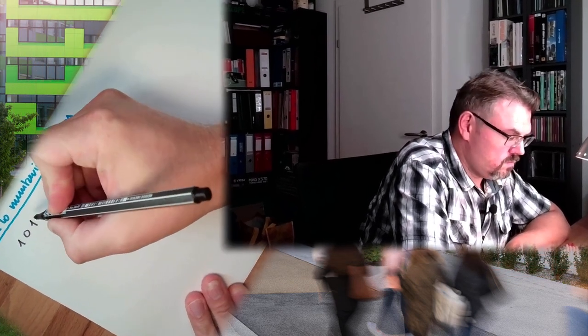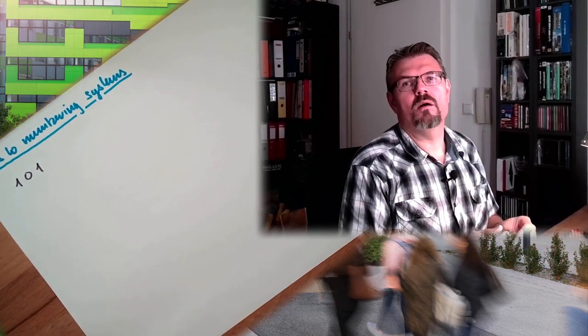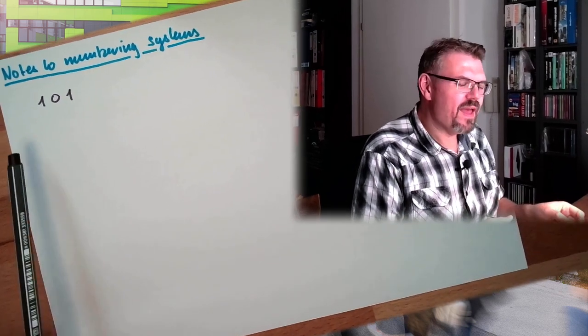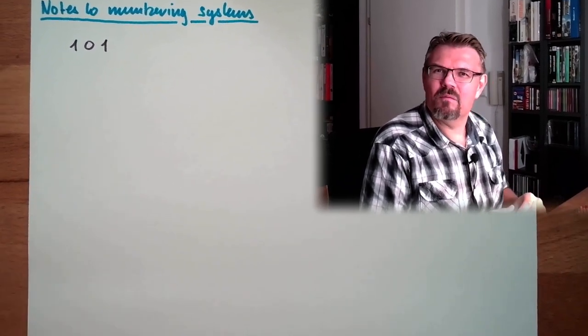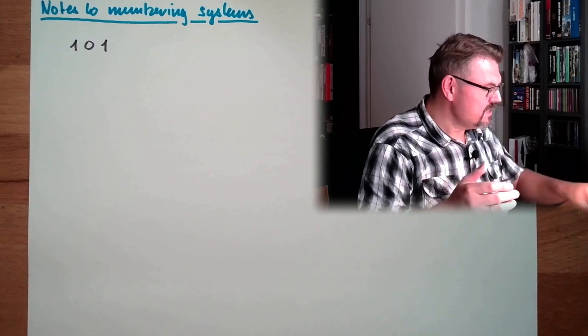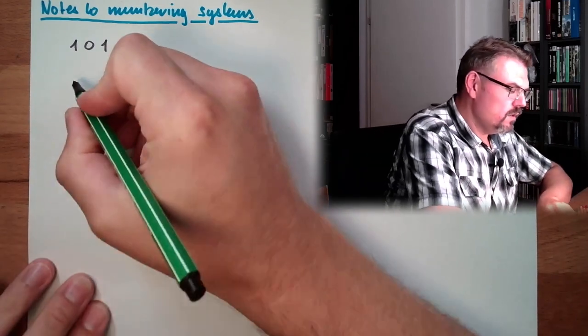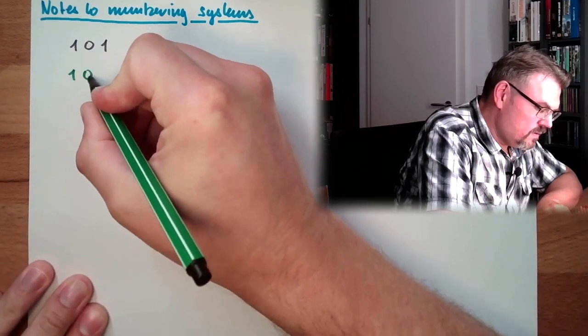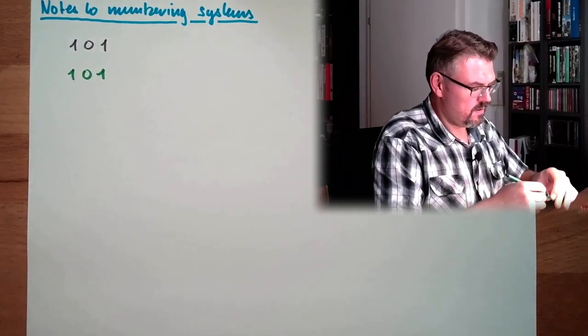Let's say we have a number which looks like that. That's our number. It could be any number. For instance, if 101 is decimal...